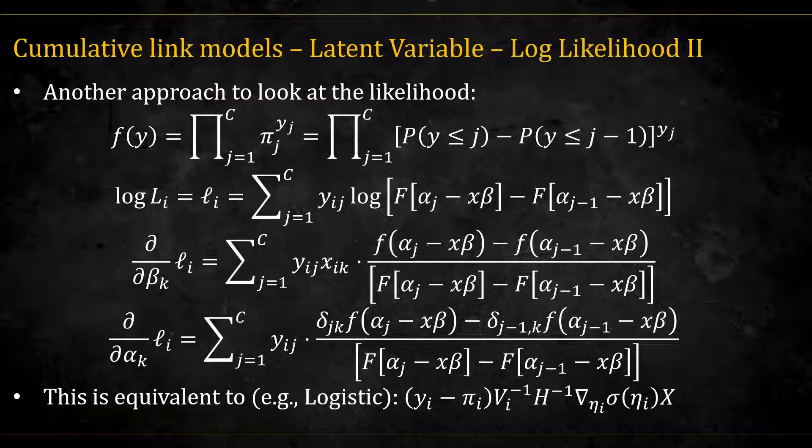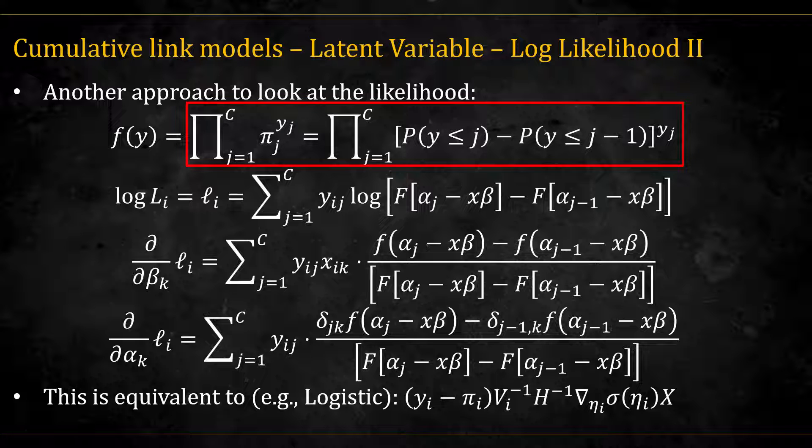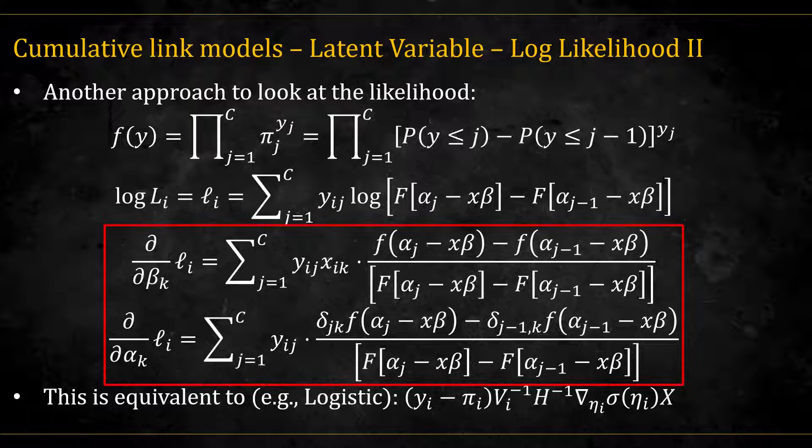There is also another approach to look at the likelihood, without the glm analysis. For example, here for the categorical. We can replace each probability with the difference between the consecutive cdf's. Note that the first element in the product will only have p y less equal than j without the second term. And the last element will have 1 minus the cdf at c minus 1. We can replace the p with the cdf function of the alpha j minus x beta. We get this. Then if we take the derivatives, we get these expressions over here. Delta j k is equal to 1 when j is equal to k and 0 otherwise. Of course, we need to sum this over the i index for the full likelihood.